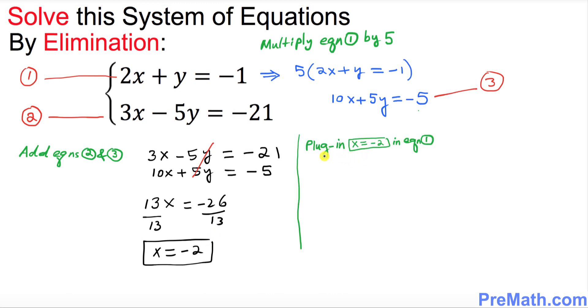Now in the next step we want to plug in whatever we got, x equals negative 2, into our equation number one and we know our equation number one is 2x plus y equals negative 1.